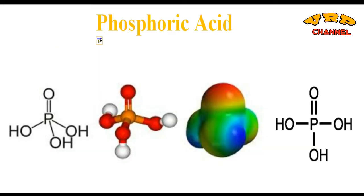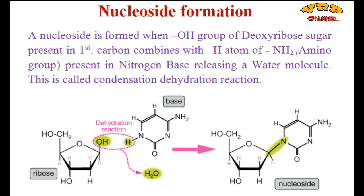Next is phosphoric acid with molecular formula H₃PO₄. The central phosphorus atom is bonded with three hydroxyl groups on either side by single bonds. The remaining oxygen atom is bonded by a double bond with the central phosphorus atom to produce H₃PO₄. Now let's see how a nucleoside is formed by the union of all three components: the sugar, the phosphoric acid, and the nitrogen bases. First of all, a nucleoside is formed when deoxyribose sugar combines with nitrogen bases, losing a water molecule.